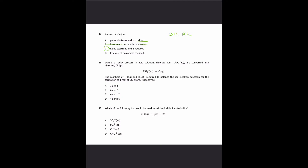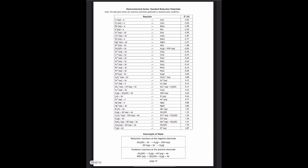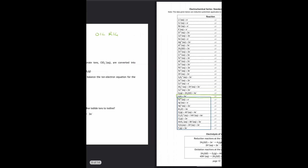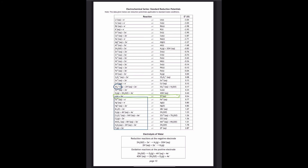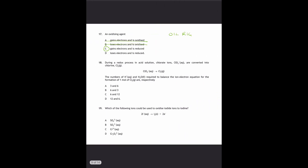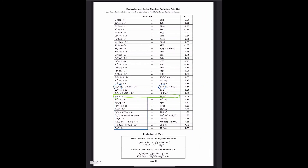Skipping to question 19: which of the following ions could be used to oxidize iodide ions to iodine? We're looking for an oxidation reaction, so we find the iodide-to-iodine reaction in the electrochemical series. For a suitable oxidizing agent, we need anything below that reaction on the left. Checking the options: SO₄²⁻ is above the reaction — not suitable. SO₃²⁻ is on the right-hand, reducing agent side — not suitable as an oxidizing agent. Cr³⁺ is too high up — not suitable. Dichromate is underneath that reaction on the left — so dichromate is the suitable oxidizing agent.